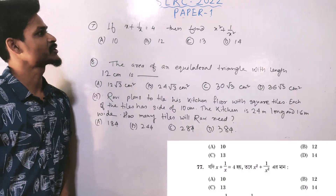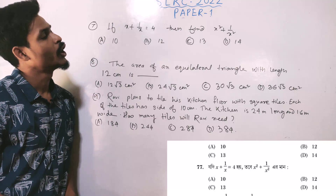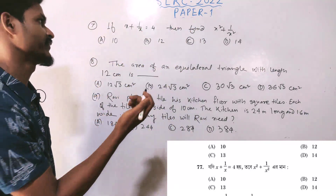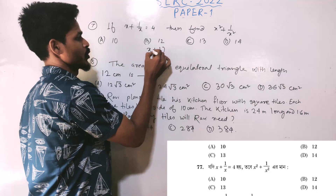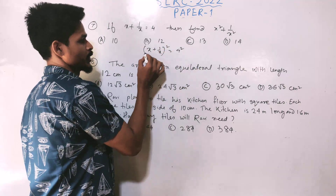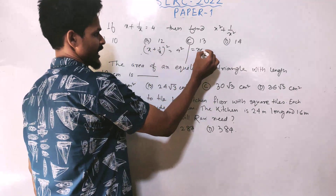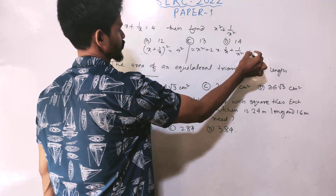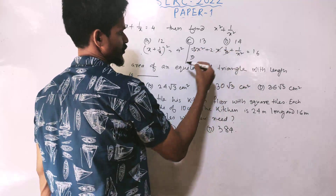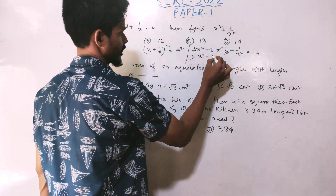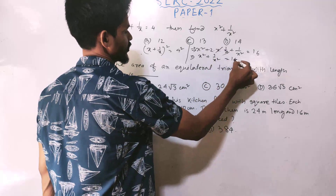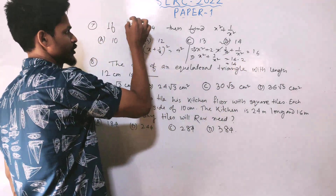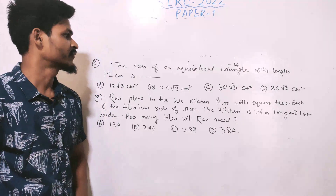Question 7: If x plus 1/x equals 4, find the value of x squared plus 1/x squared. Square both sides using (a+b)² formula: a² plus 2ab plus b². This gives x² plus 1/x² plus 2 equals 16. So x² plus 1/x² equals 14, which is option 4.